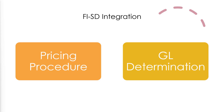So let's jump into the video. When we talk about FISD integration, the two main components that come into picture are the pricing procedure and the GL determination. The pricing procedure is the primary link between the sales order and the accounting documents that get generated in the entire O2C cycle. Once a document is about to get generated, GL determination also comes into picture, and this GL determination is closely linked with the pricing procedure. So first, let us try to understand the pricing procedure from a logical point of view — why do we need a pricing procedure, what are the different elements in it, and how we can easily remember them to debug every issue in the pricing procedure or the entire O2C cycle without needing to memorize all the configuration steps.